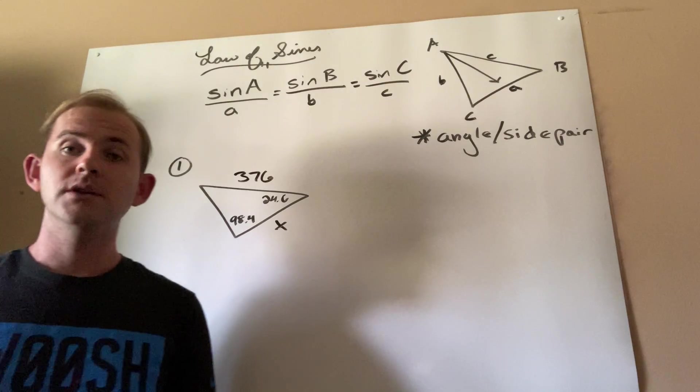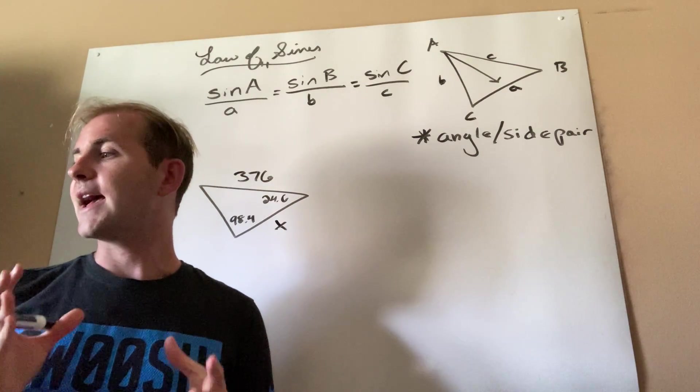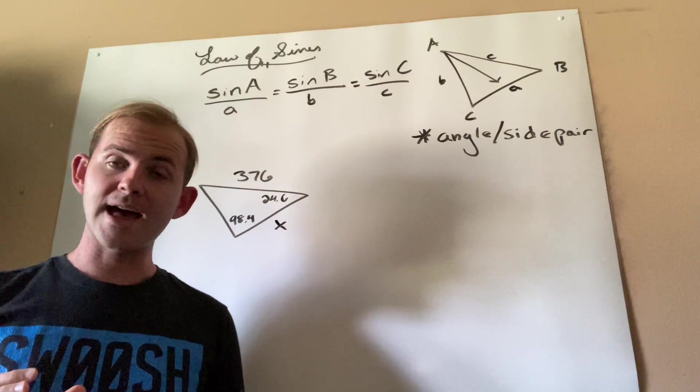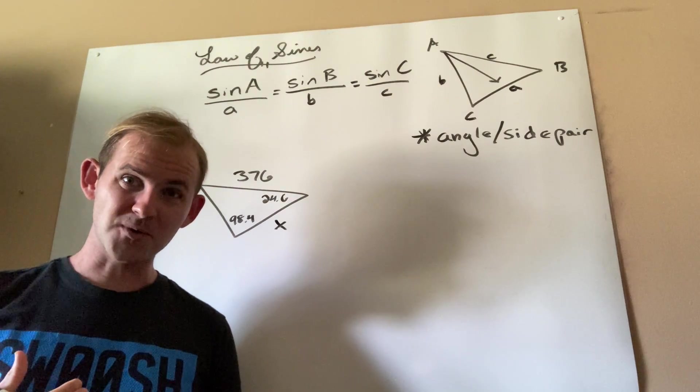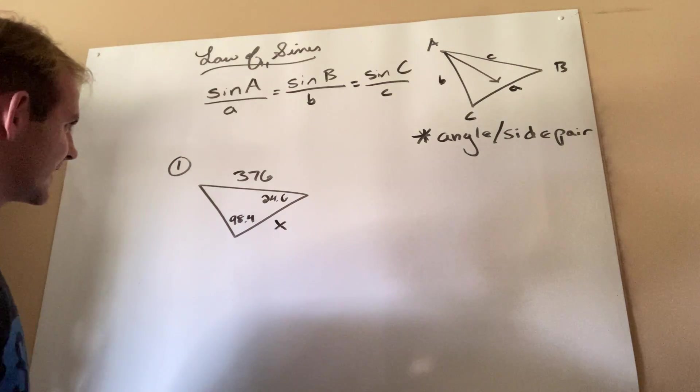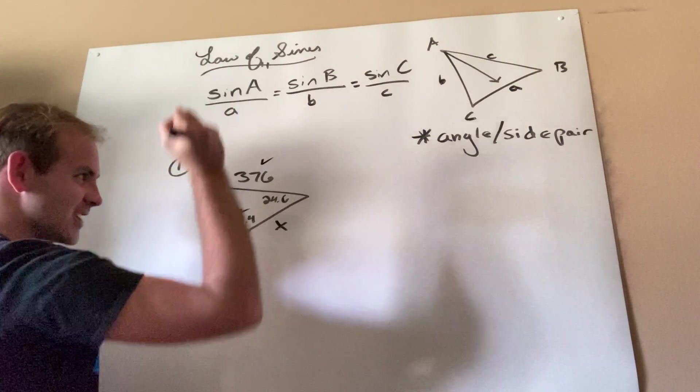Alright, guys. First things first. Do I have an angle side pair? In other words, do I have an angle that I know across from a side that I know? Why, yes, I do. Check and check.